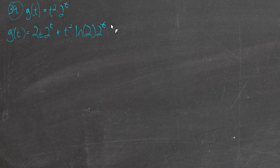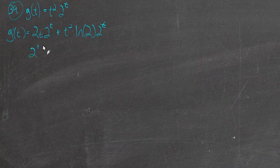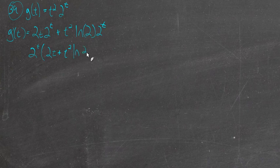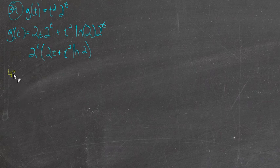We have a 2 to the t in both expressions, so we can factor out a 2 to the t. We get 2t plus t squared times the natural log of 2. That's plenty good. So just recognizing that we need to use the product rule is the main thing right there.